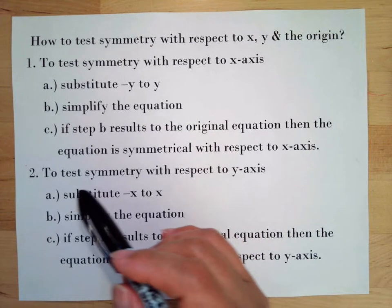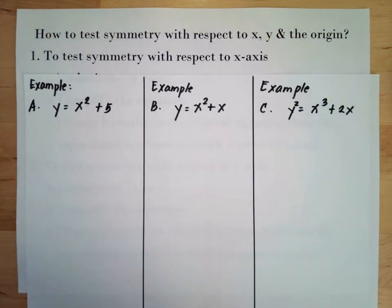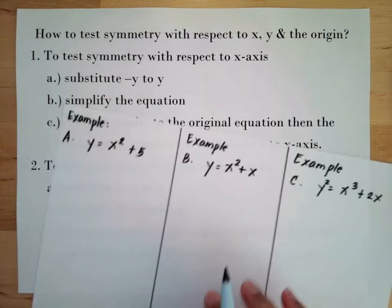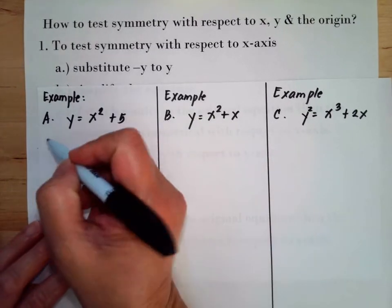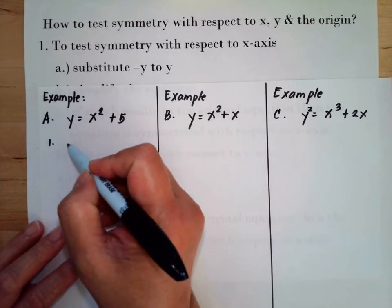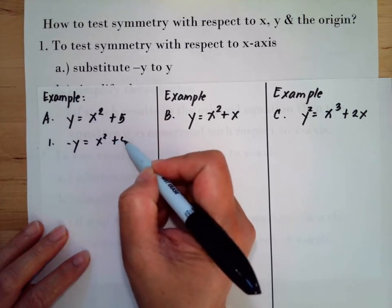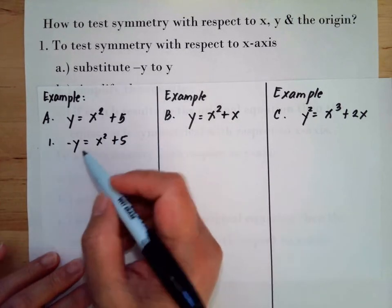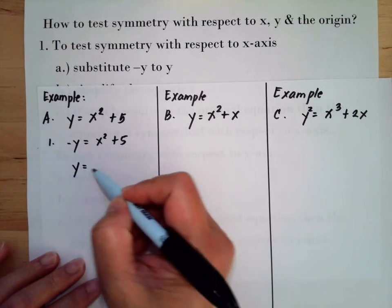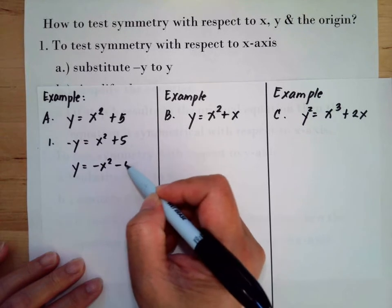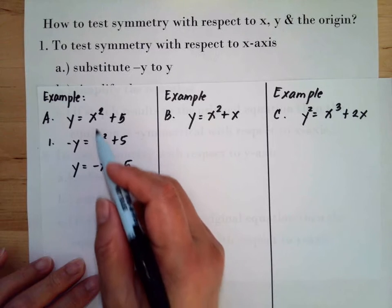We substitute negative y for y. So negative y is equal to x squared plus 5. To simplify, divide everything by negative, giving us negative x squared minus 5, which is not symmetrical because it did not result in the same equation.